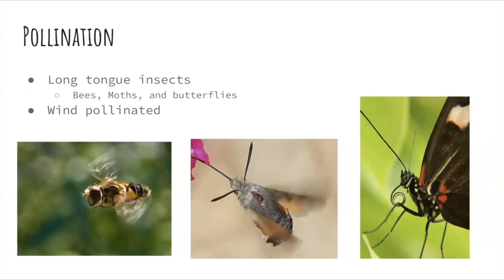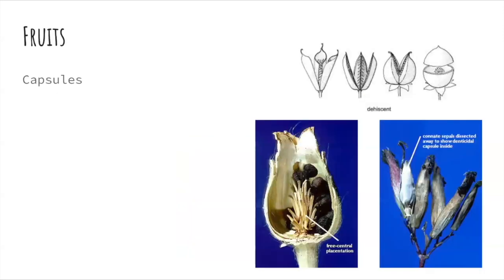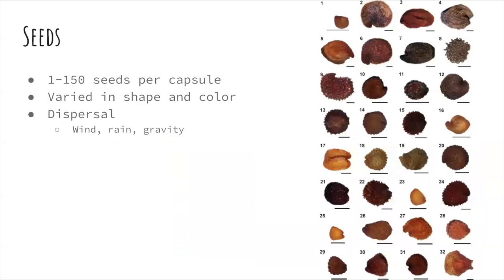It is typically pollinated by long-tongued insects, including bees, moths, and butterflies. It can also be pollinated by wind. Its fruit comes in capsules, as you can see in the pictures to the right. The amount of seeds per capsule varies between one and 150. These seeds come in a variety of shapes and colors, and are usually dispersed by wind, rain, and gravity. As you can see to the right, there is a wide variety of different seed shapes and colors.